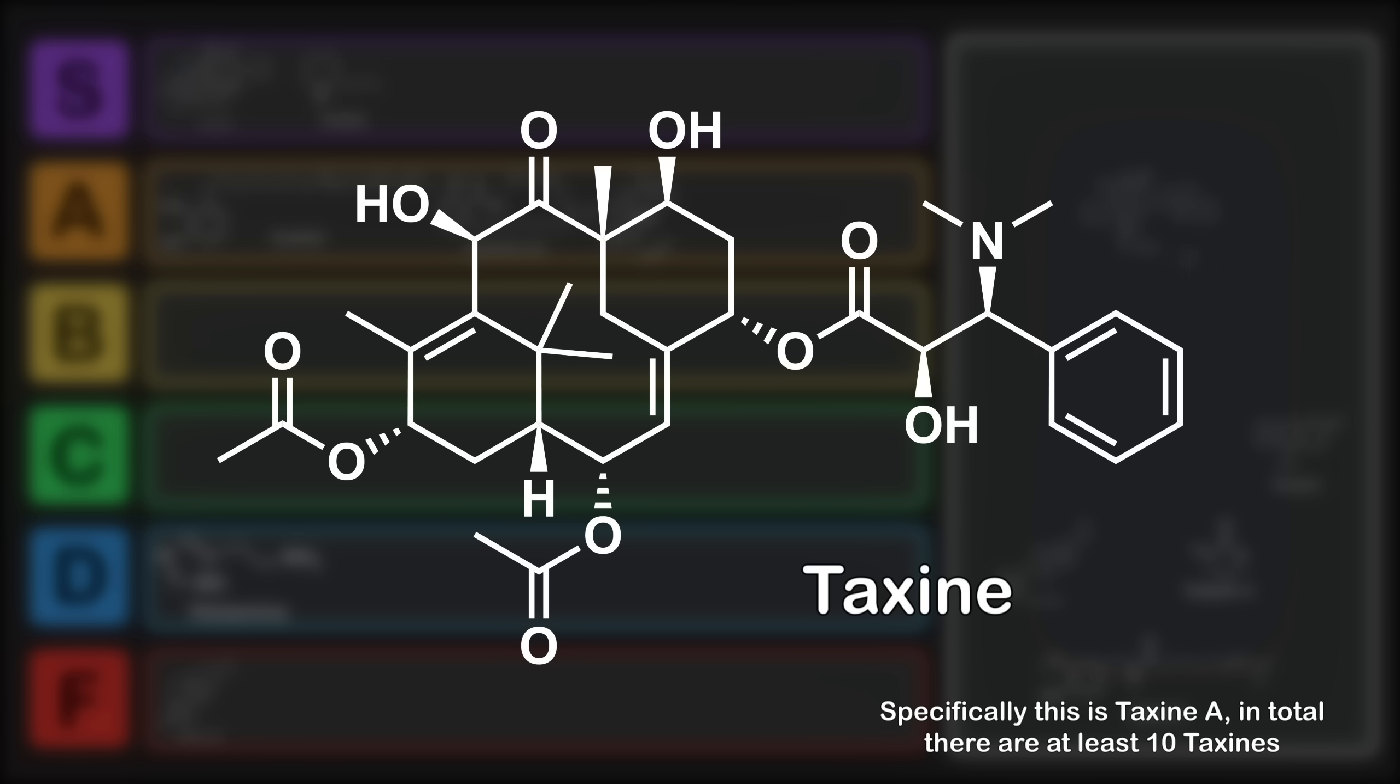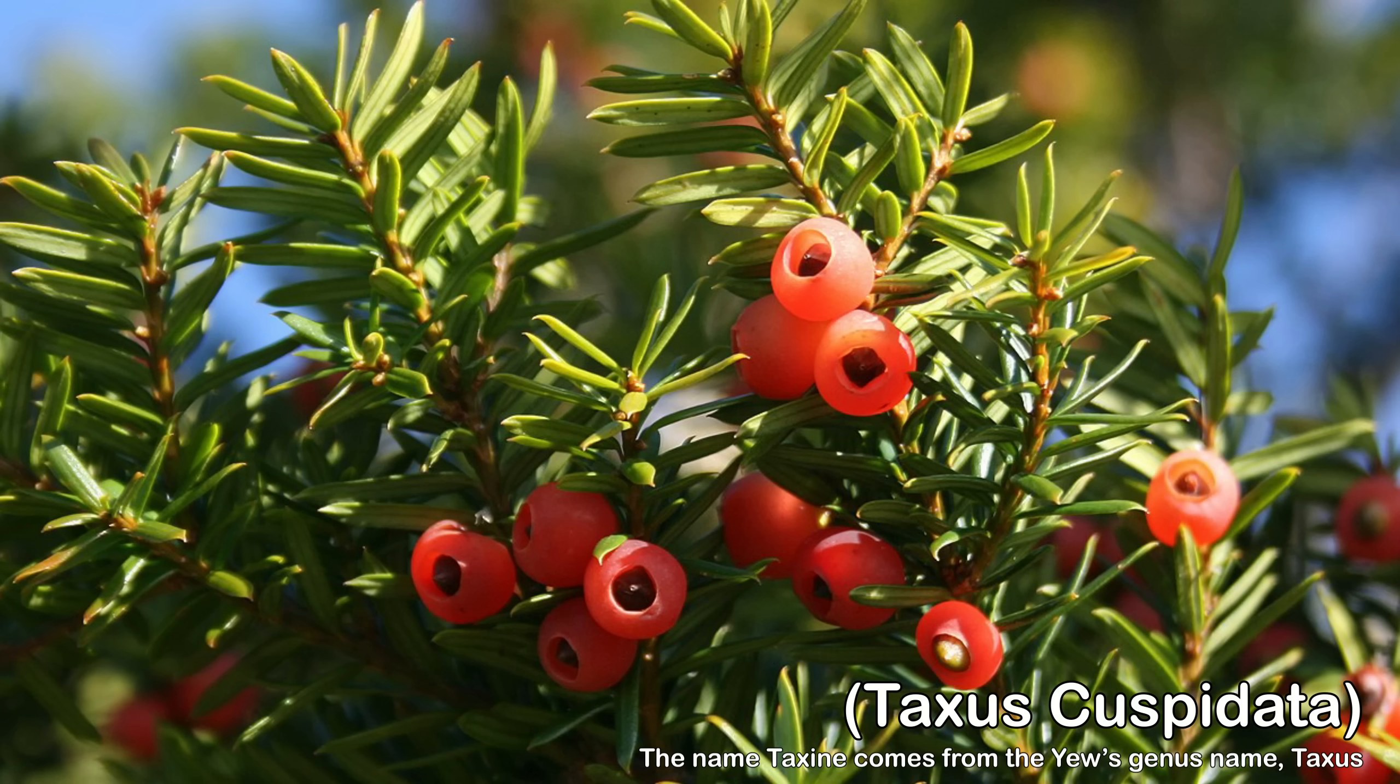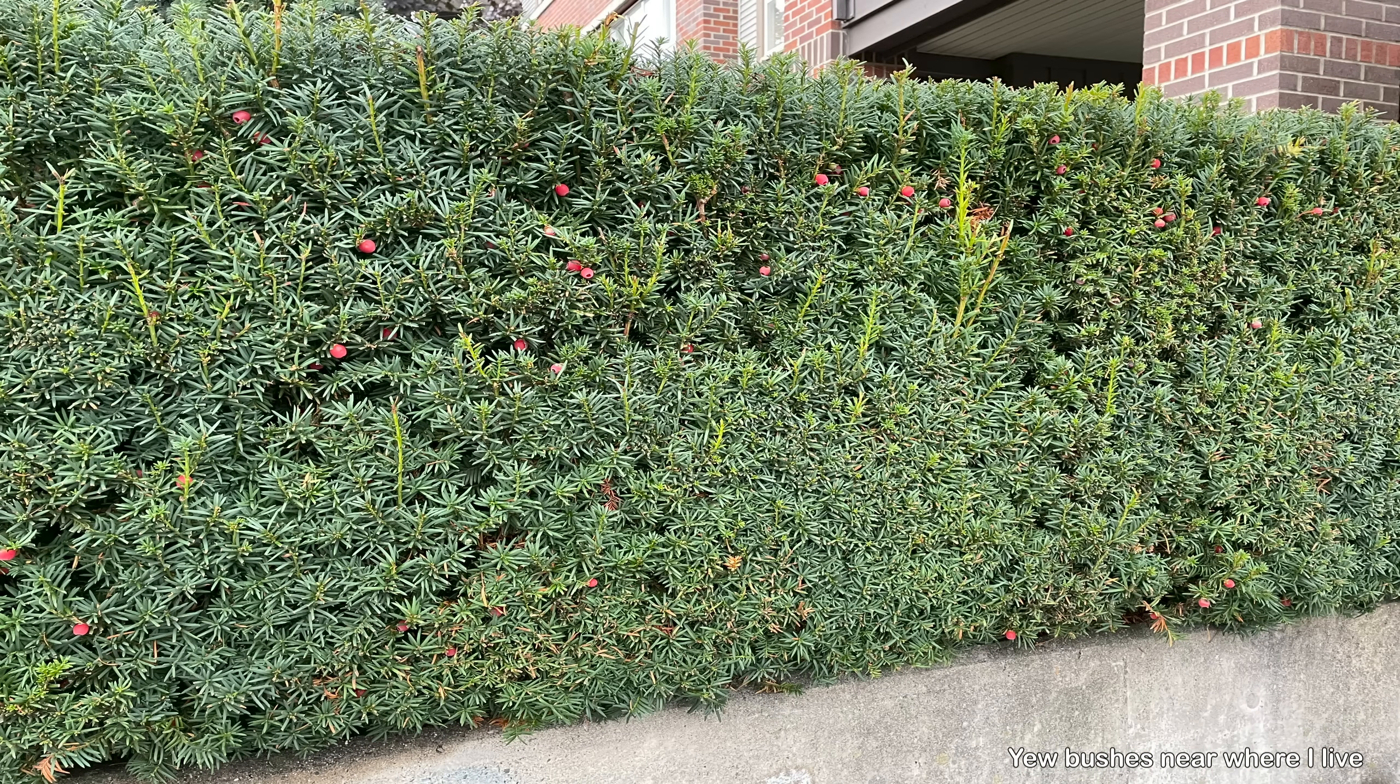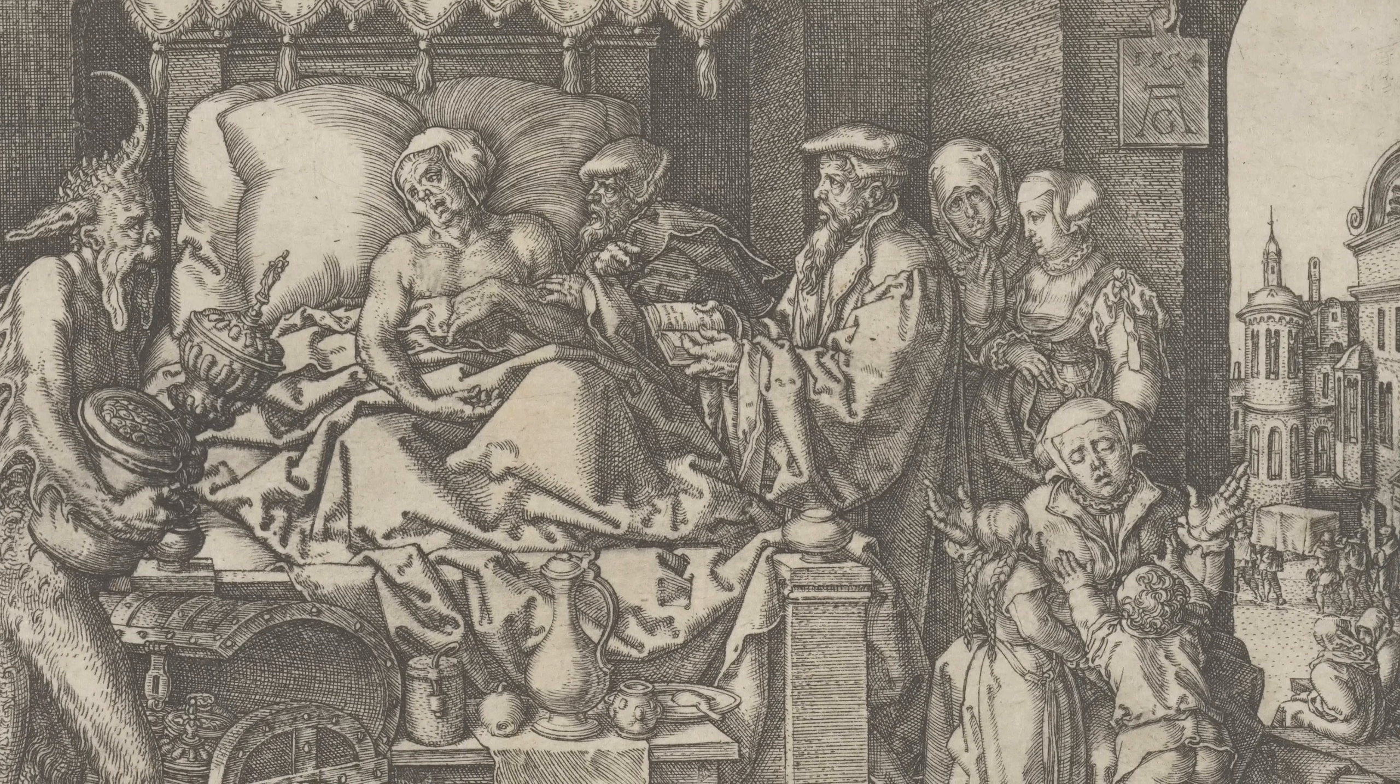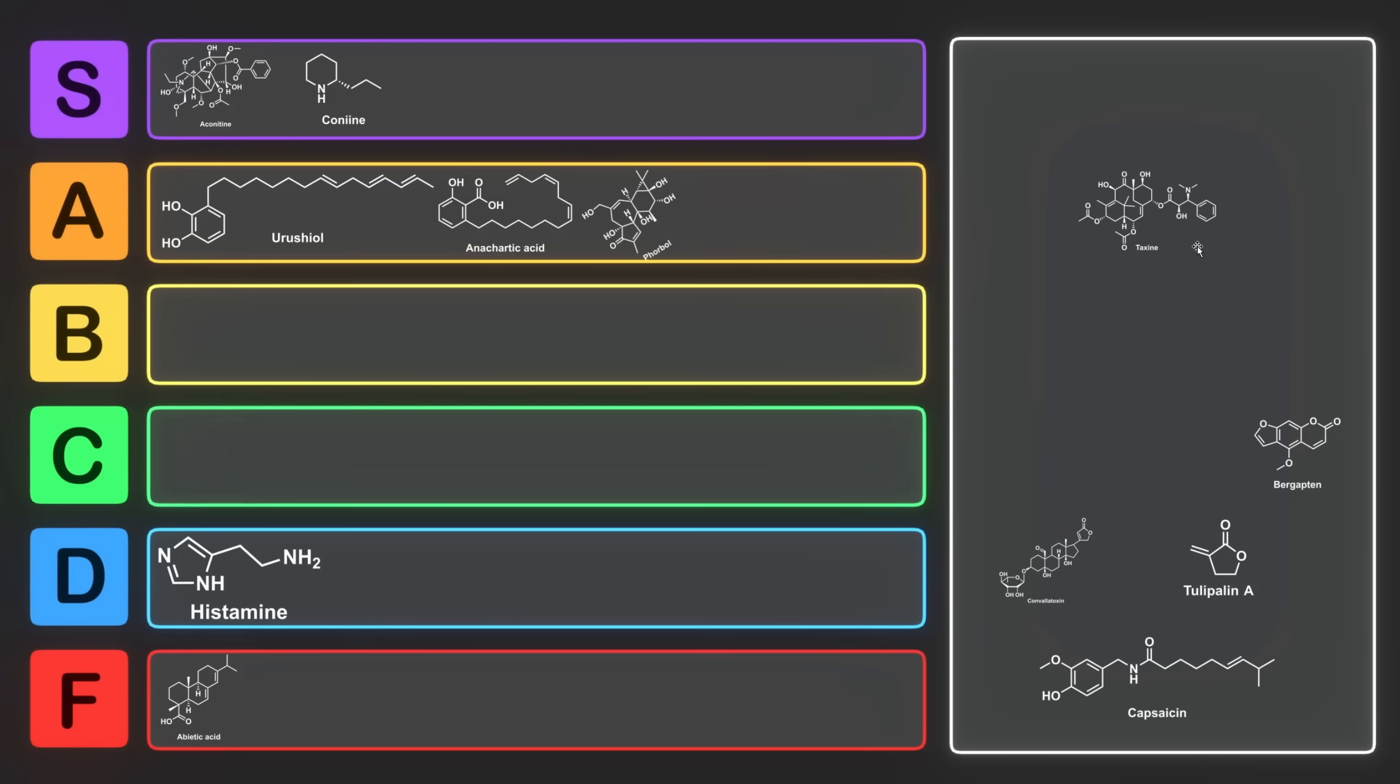Hopefully that terrible joke wasn't too taxing, but the next molecule might tax you a little bit more. This is a taxene, and the taxenes are a class of alkaloids primarily found in the yew tree. Taxene is found throughout the entirety of the yew tree, and these trees are found all around the world. Much like hemlock and conine, the yew and taxenes have been known since ancient times as a powerful poison.